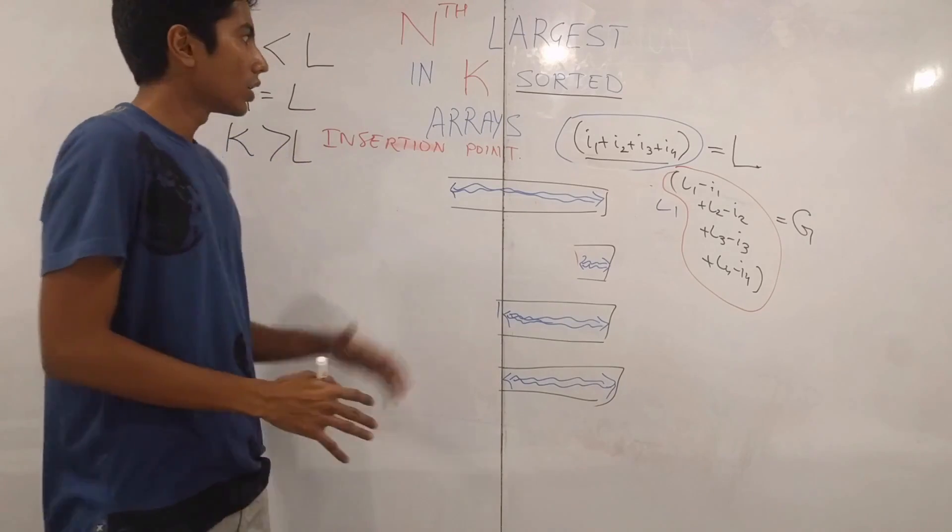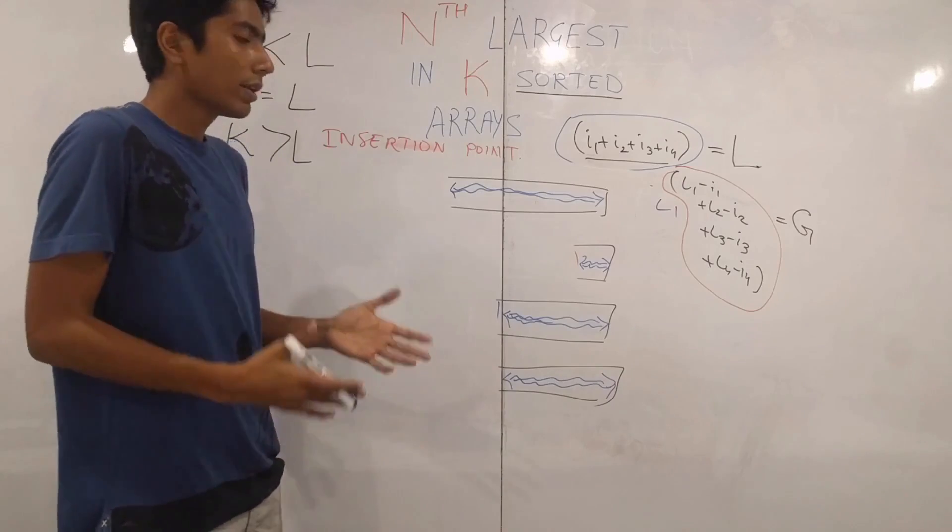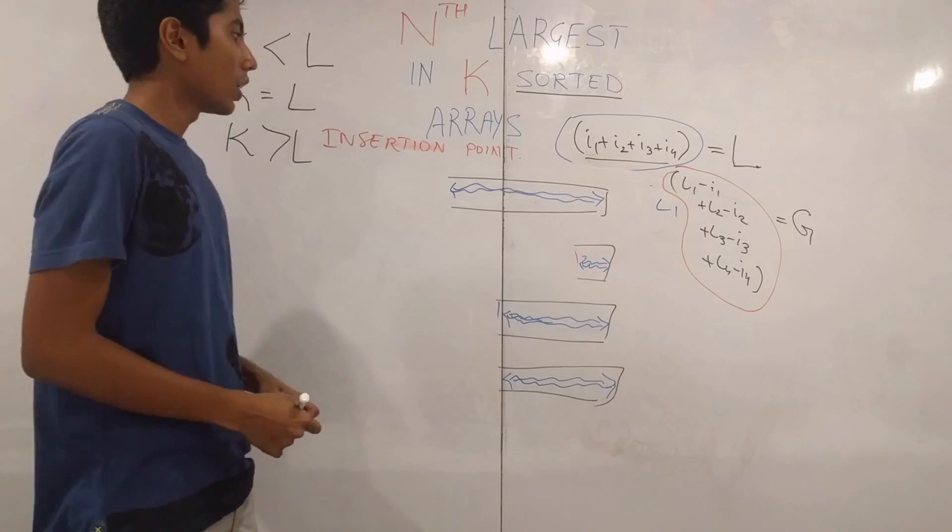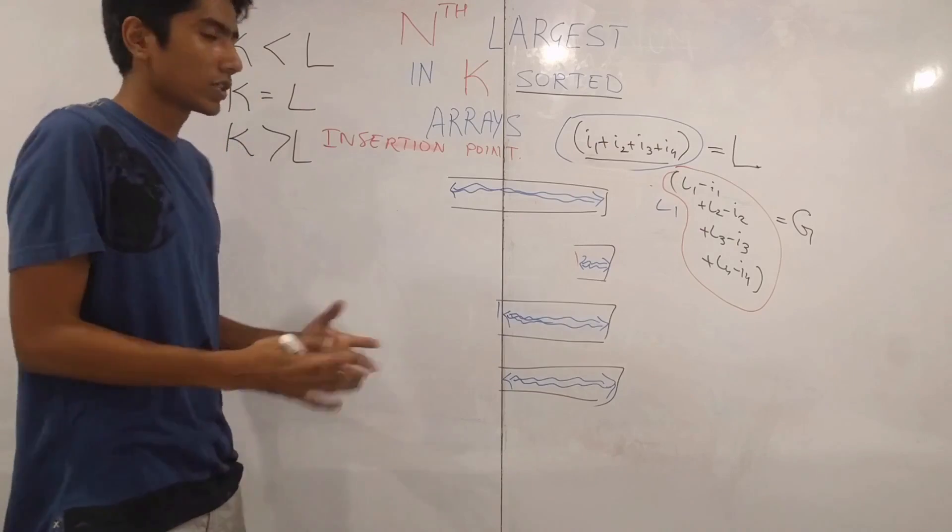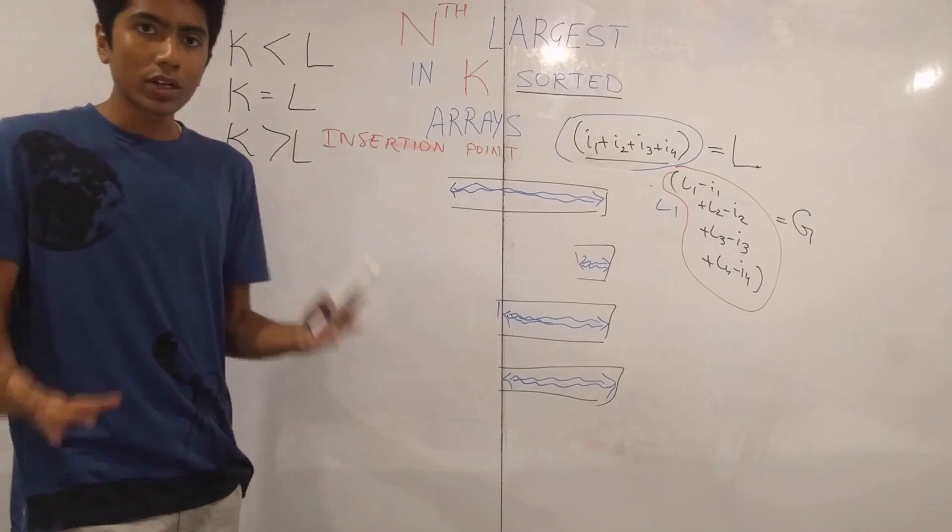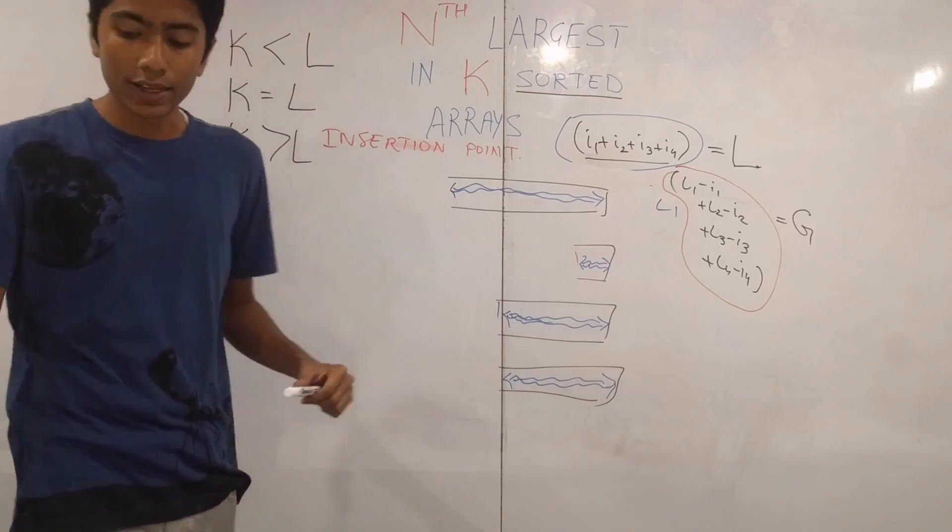So we have found a recursive solution to the original problem, where we break it into smaller problems like this, with a particular overhead of obviously breaking into smaller problems. So what is that overhead? Let's do some time complexity analysis for this.